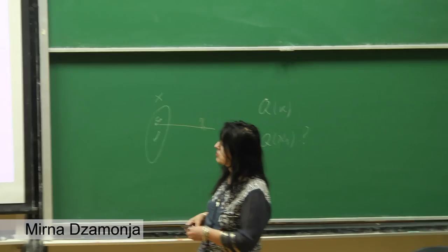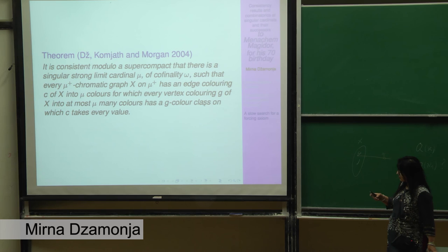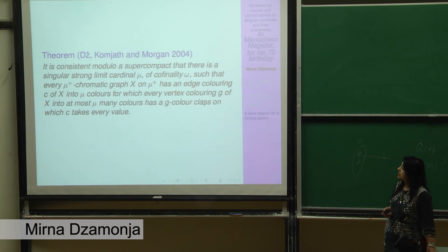So it is not known if Q of aleph 1 is always true. Many models are known where Q of aleph 1 is true. And Q of aleph 1 for specific kind of graphs which are the complete graphs is what's behind the celebrated result by Todorcevic on partitioning pairs of countable ordinals. So the rainbow coloring of countable ordinals. So this is a much more general idea. What we were able to do is to prove that you can have this kind of wild colorings of graphs on a successor of a singular cardinal. So what we have, therefore, is that we do our technique, we obtain modulo supercompact, a singular strong limit cardinal mu, which has cofinality omega, such that every mu-plus chromatic graph on mu-plus, so we have to restrict the size, has an edge coloring into mu-many colors, for which every vertex coloring G of X into mu-many colors has a G color class on which C takes every value.